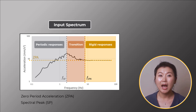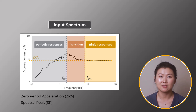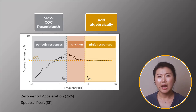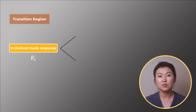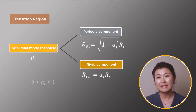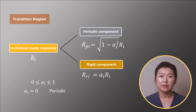The next step is to determine how to incorporate the rigid response calculation in our mode combination methods for response spectrum analysis. Mode combination methods like SRSS, CQC, and Rosenblues are suitable for the periodic region, and the rigid response should be added algebraically. In the transition region, the response of an individual mode is decomposed into two parts: the periodic part RP and the rigid part RR, controlled by one coefficient alpha, which is a number between 0 and 1. If alpha is 0, the modal response becomes purely periodic, and if alpha is 1, it's purely rigid.